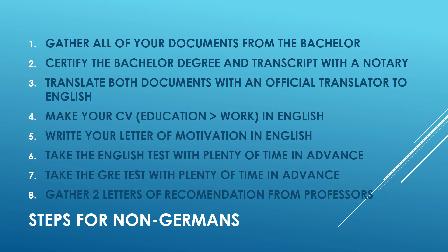Now, these steps are for people who are non-German or don't have a German bachelor. First of all, you have to gather all the documents mentioned — your bachelor degree and your transcript — and certify them with a notary. Once you have the stamps, you have to translate both documents with an official translator into English. I recommend going to the notary first, because when you make the translation, the notary seal will also be translated. If you do it the other way around, the notary seal will not be translated, which might be a problem.